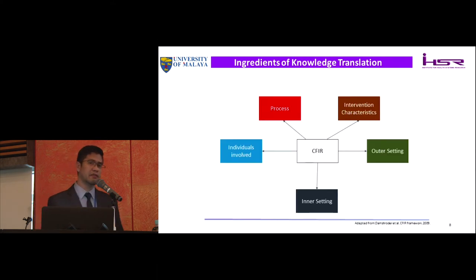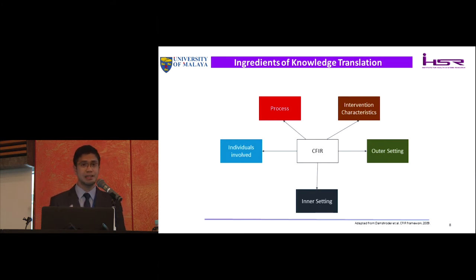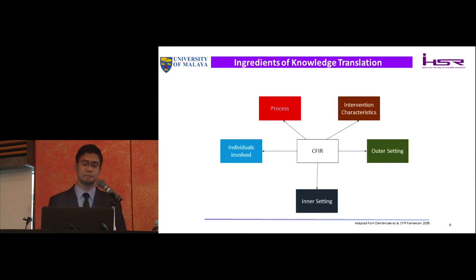CFIR was developed by Damschroder in 2009. It says there are five elements to consider whenever you try to facilitate KT in your research projects. First is the process, which focuses on the overall structure of your study — it needs to be designed and tailored in a way that facilitates KT. Second is intervention characteristics, focusing on your research products and findings, which need to be relevant and attractive enough to be utilized by stakeholders.